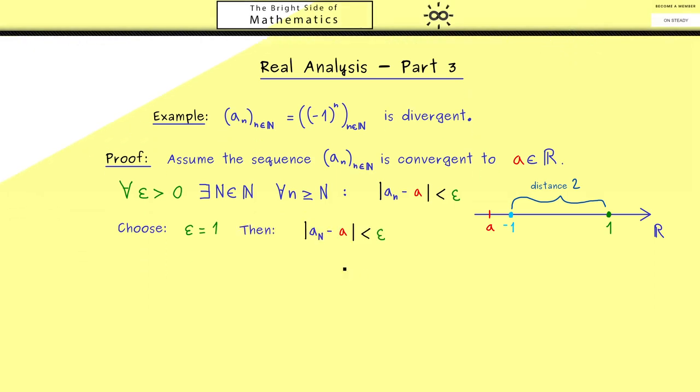Now by definition for this epsilon we find a capital N. Therefore we now know the distance from a_n to a is less than our given epsilon, and of course we also have this result for the next member in the sequence. Now you know this holds for infinitely many sequence members but we only need these 2, because we know one of the 2 indices is even and the other is odd. Therefore we get both outcomes -1 and 1. With this you might already see the problem we have. We measure 2 distances but both are less than 1 but the distance -1 to 1 is still 2.